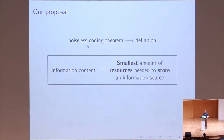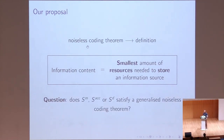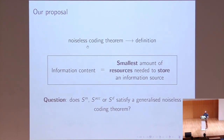In practice, we define a quantity called information content that is the smallest amount of resources needed in order to store an information source. Once we have defined this quantity, we can also answer an old question: does one of the entropies already introduced satisfy a sort of generalized Noiseless Coding Theorem? The answer turns out to be no, as I will show at the end.